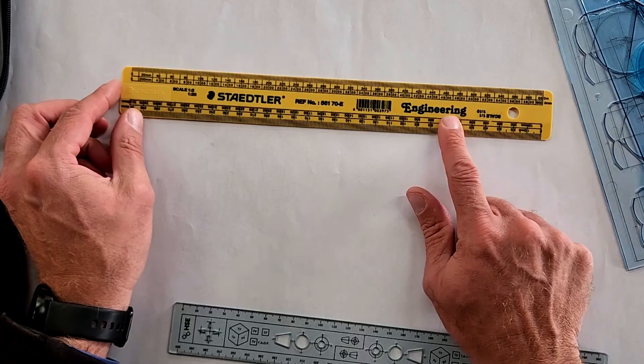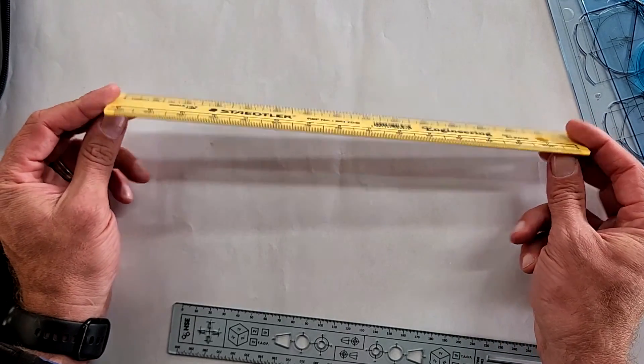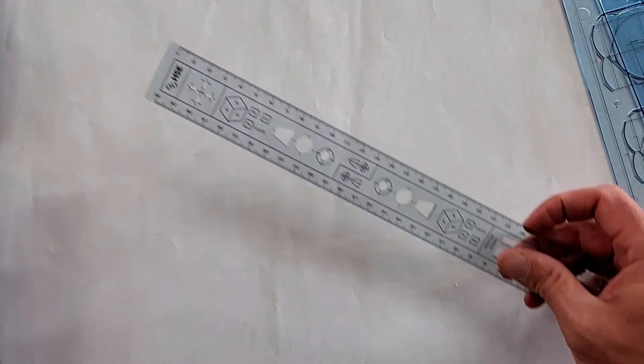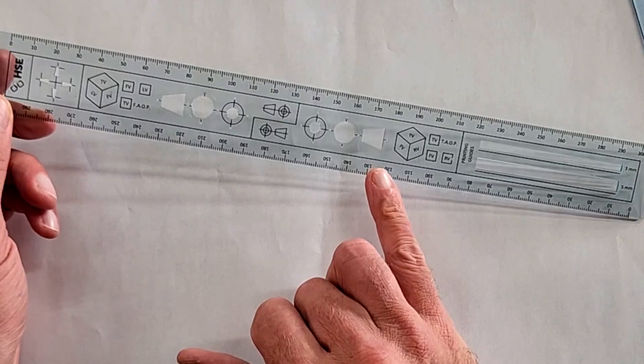The first one is a Stadler scale ruler. You've got four scales on either side and it's the most common scales that's used in engineering graphics and design. So really worth having that. But HSE has taken it one step further and they've come up with their very own ruler.